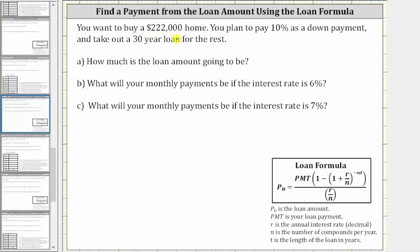You want to buy a $222,000 home. You plan to pay 10% as a down payment and take out a 30-year loan for the rest. Part A, how much is the loan amount going to be?